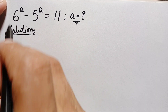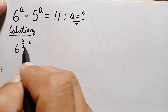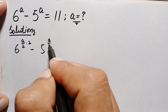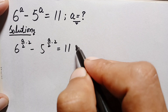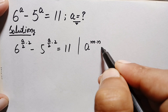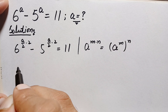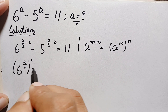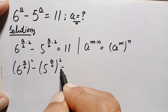First of all, we can rewrite these two powers. 6 raised to power a can be written as 6 raised to power (a/2 × 2), and similarly 5 raised to power a becomes 5 raised to power (a/2 × 2). Using the exponential identity a raised to power m×n, which equals a raised to power m, whole raised to power n, the left hand side becomes 6 raised to power (a/2) whole square minus 5 raised to power (a/2) whole square, equal to 11.